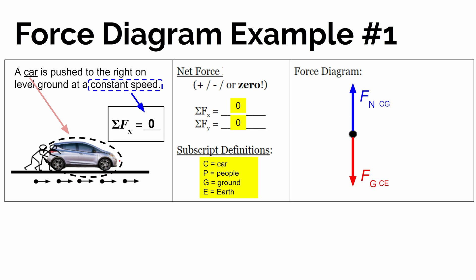Coming back over here, it says these people are pushing the car to the right. So that means we have to have an arrow showing the size of the push that the people are exerting on the car. And it doesn't fit neatly into our categories of normal force, gravitational force, frictional force, or tension force. So we can just use the notation F sub P, which represents a force of push.